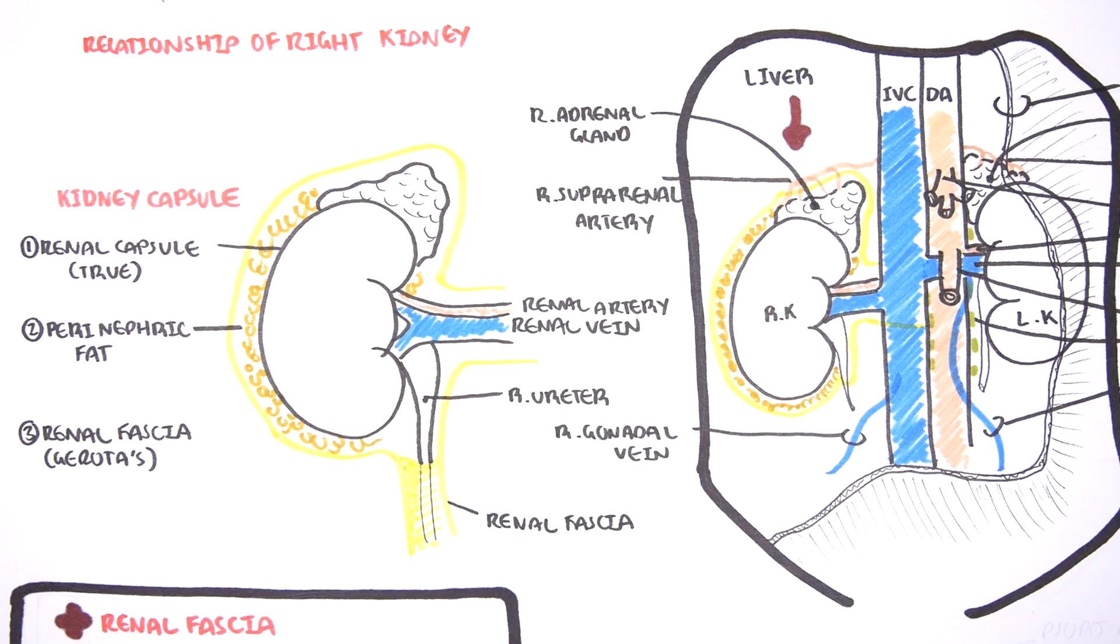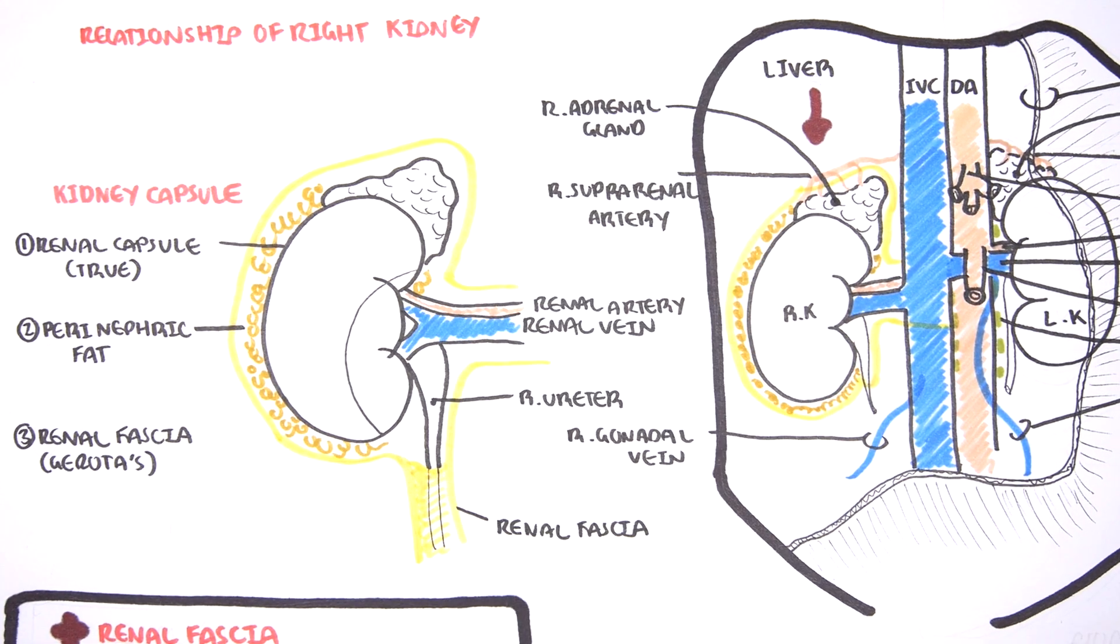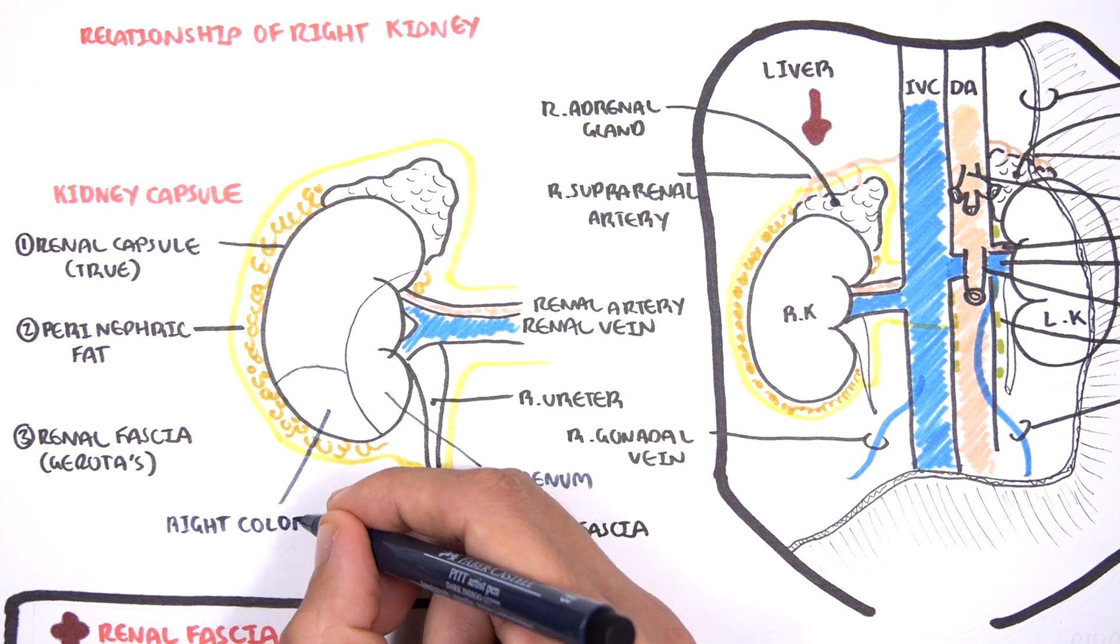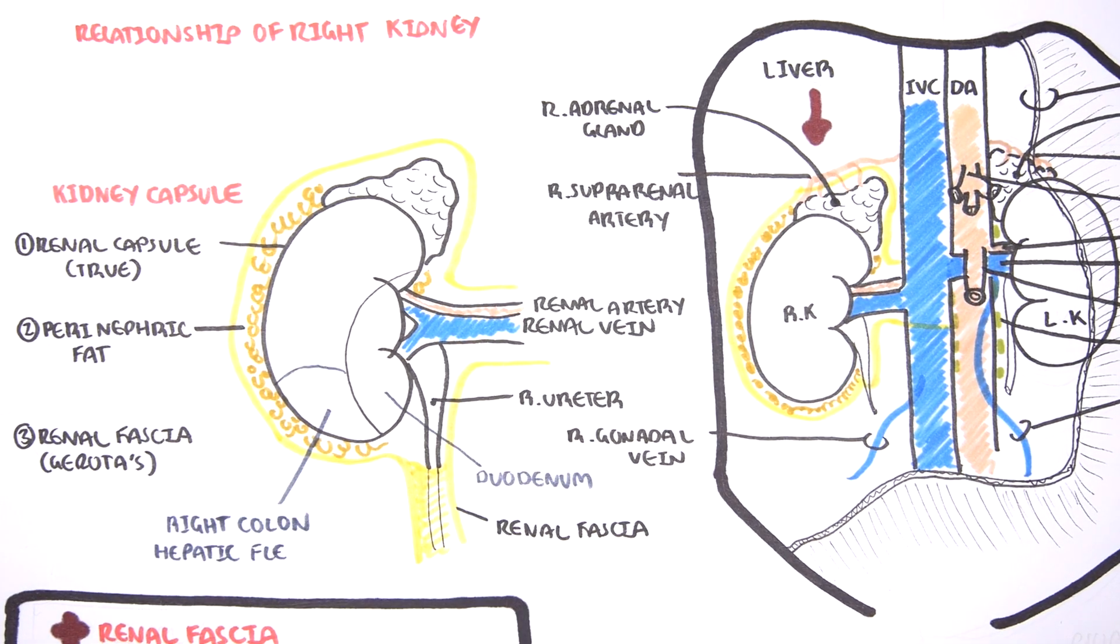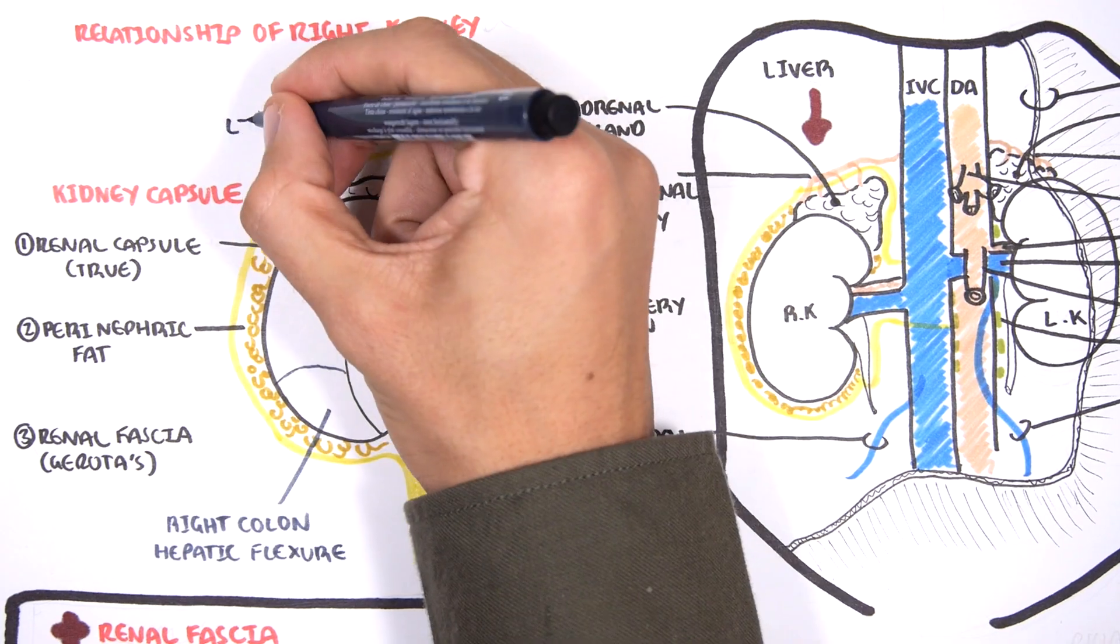The relationship of the right kidney to other organs. Here is where the duodenum sits. The right colon, the hepatic flexure sits here and all this is really where the liver is.